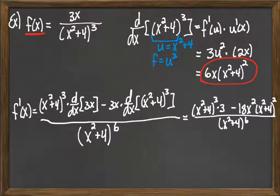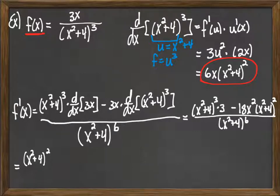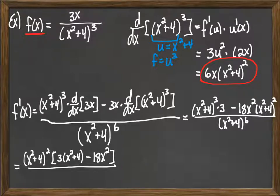Now we start simplifying by factoring out a common factor. The quantity (x squared plus 4) appears in each term of the numerator. We factor out (x squared plus 4) squared. On the first term, we had (x squared plus 4) to the third, and after taking out two of them, one remains — giving 3 times (x squared plus 4). On the second term, we took out the whole (x squared plus 4) squared, leaving just minus 18x squared. That's all over (x squared plus 4) to the sixth.